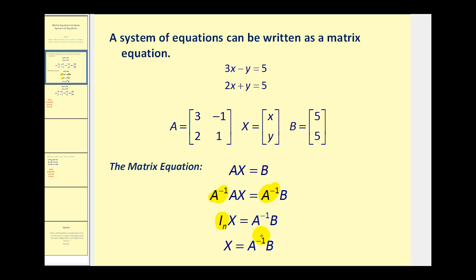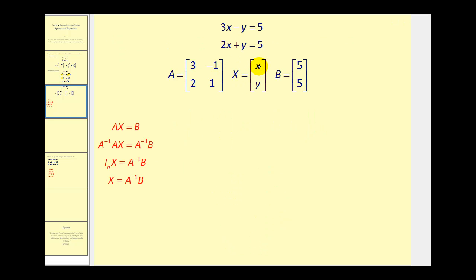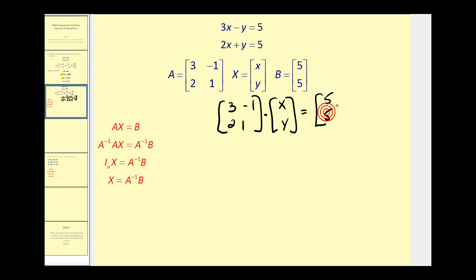Let's take a closer look at this on the next screen. This is the same system we saw on the previous screen. So if the matrix equation was AX equals B, we would have the matrix 3, negative 1, 2, 1 times the variable matrix equal to the matrix 5, 5. Here's our matrix A, here's our variable matrix, and here's matrix B. What we want to do now is multiply both sides of the equation by A inverse. Since this video focuses on the process of using a matrix equation to solve the system, we're going to find the inverse of matrix A on the graphing calculator.